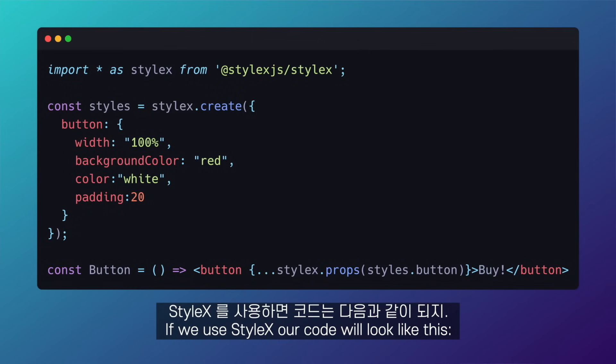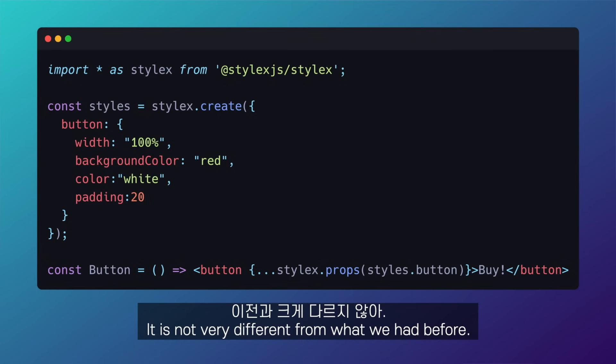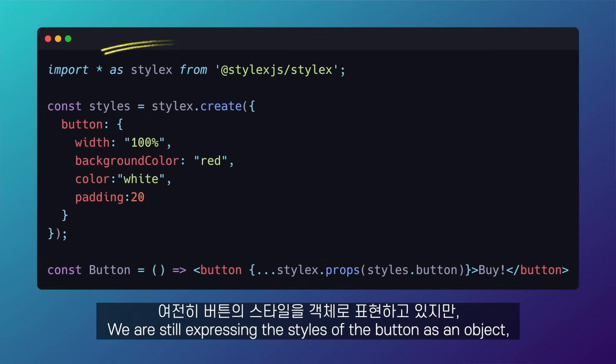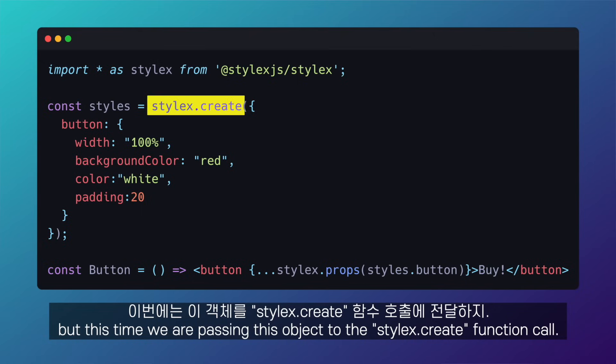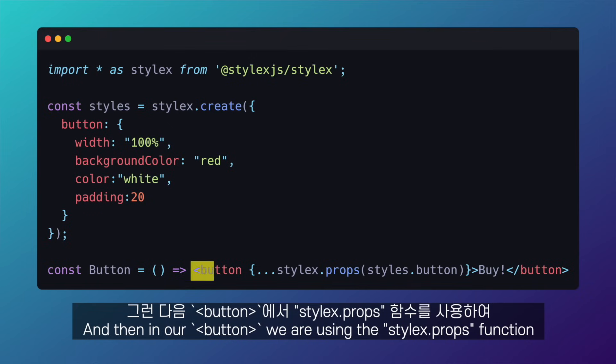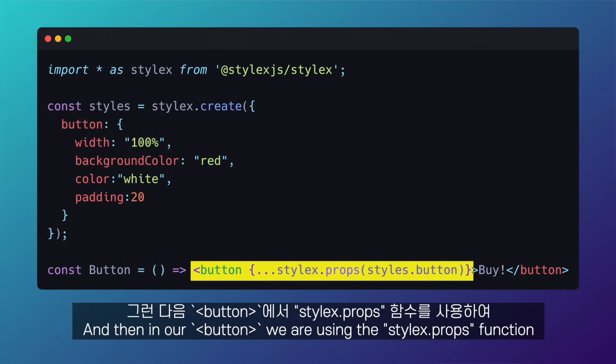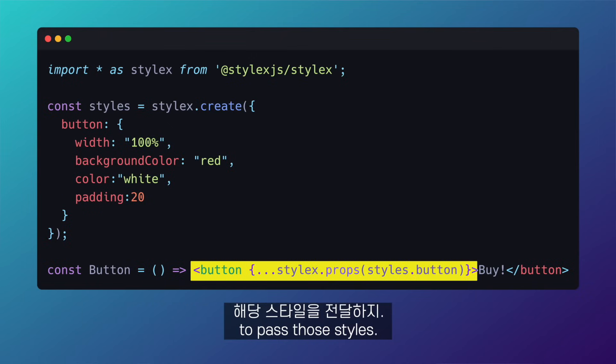We can't have multiple styles on the same element or have conditional styles, among other things. If we use StyleX, our code would look like this. It is not very different from what we had before — we are still expressing the styles of the button as an object, but this time we are passing this object to the StyleX create function call. And then, in our button, we are using the StyleX props function to pass those styles.